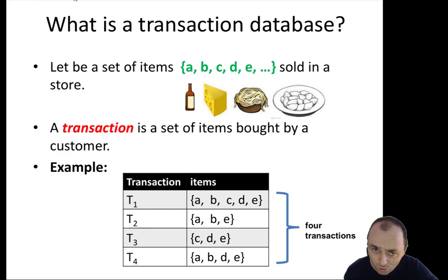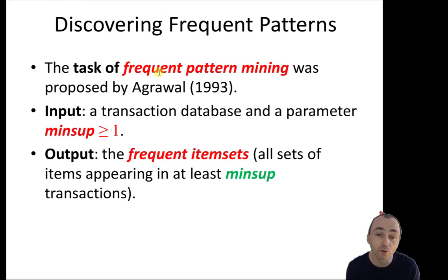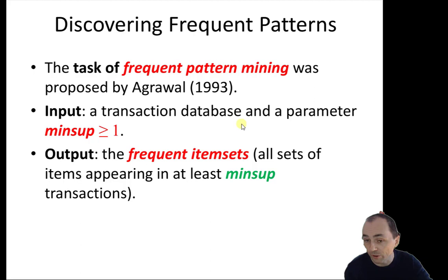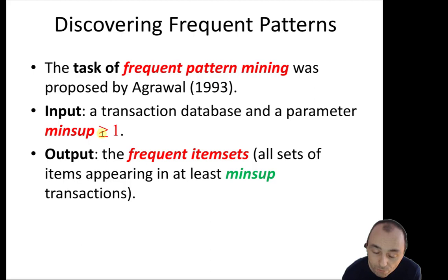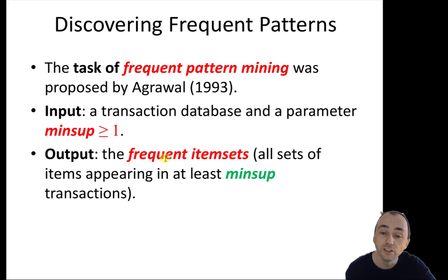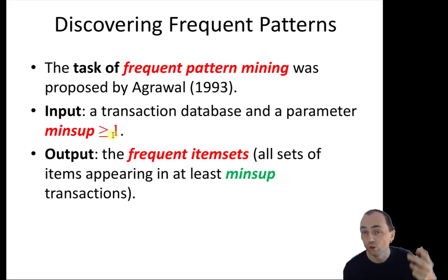If we have data like this, maybe we want to analyze it to find some patterns — what people like to buy together. There is a popular data mining task called frequent pattern mining. The goal is to find what appears many times in your data, for example what people buy many times together in a store. The input is a transaction database and the user sets a parameter called the minimum support. The output will be the sets of items — itemsets — that appear in at least min_sup transactions.